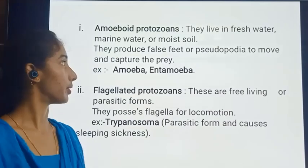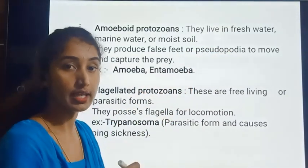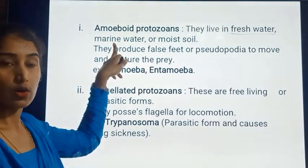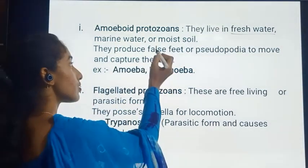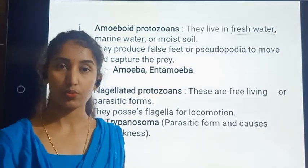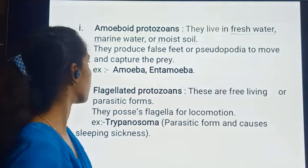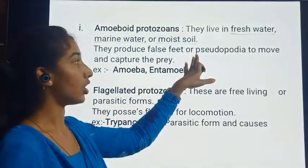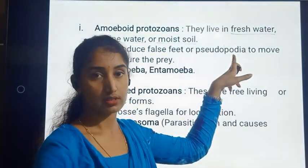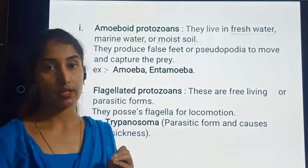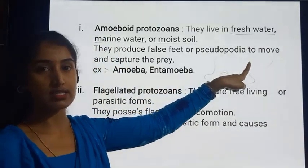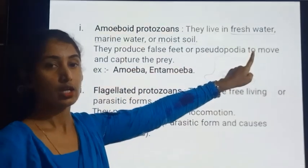Amoeboid protozoans live in fresh water, marine water, or moist soil. They produce false feet which we call pseudopodia — 'pseudo' stands for false and 'podia' stands for feet. These amoeboid protozoans form pseudopodia for their movement.